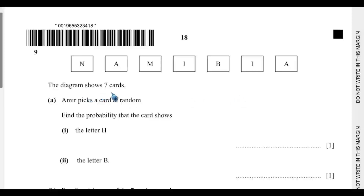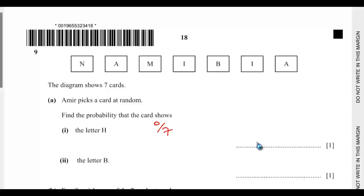The diagram shows 7 cards. Amir picks a card at random. Find the probability that the card shows the letter H. H appears 0 times, so that would be 0 out of 7, which is 0. For the letter B, letter B appears once, so that would be 1 out of 7.